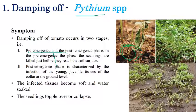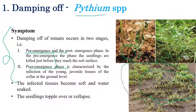In post-emergence damping off, seedlings are killed after emerging from the soil, especially in the young or juvenile stages. Toppling or collapsing of seedlings can also be observed. This is one of the most important diseases not only in tomato nursery production but in almost all crops propagated through seedlings.